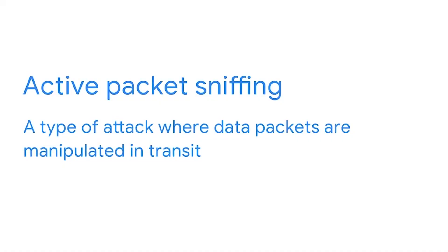Active packet sniffing is a type of attack where data packets are manipulated in transit. This may include injecting internet protocols to redirect the packets to an unintended port or changing the information the packet contains. An active packet sniffing attack would be like a neighbor telling the delivery person, 'I'll deliver that mail for you,' and then reading the mail or changing the letter before putting it in your mailbox. Even though your neighbor knows you, and even if they deliver it to the correct house, they are actively going out of their way to engage in malicious behavior.